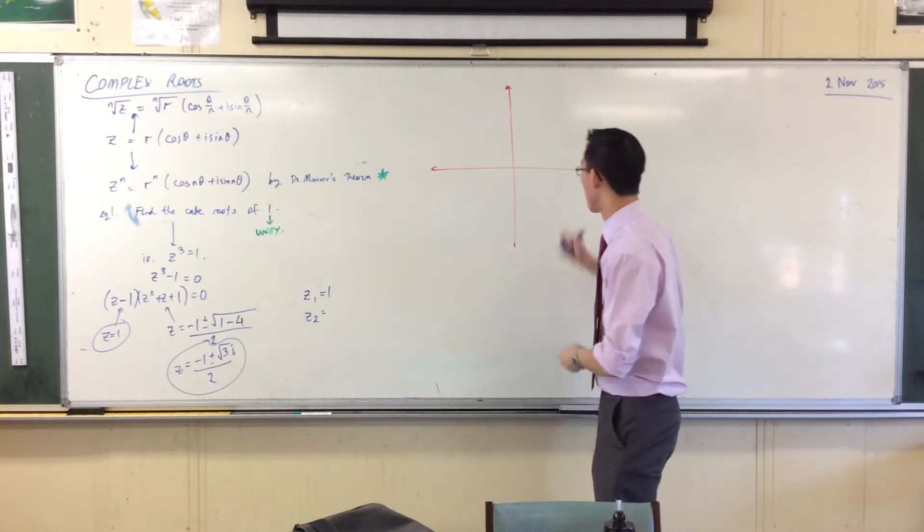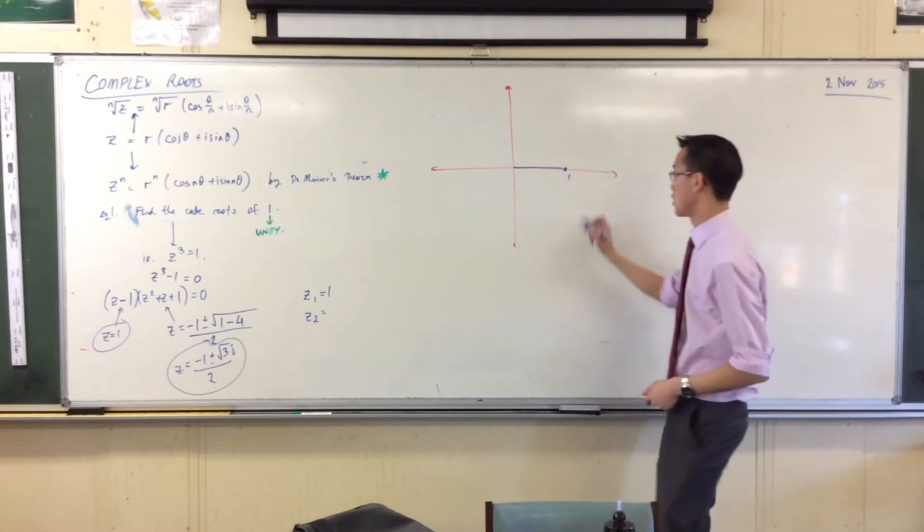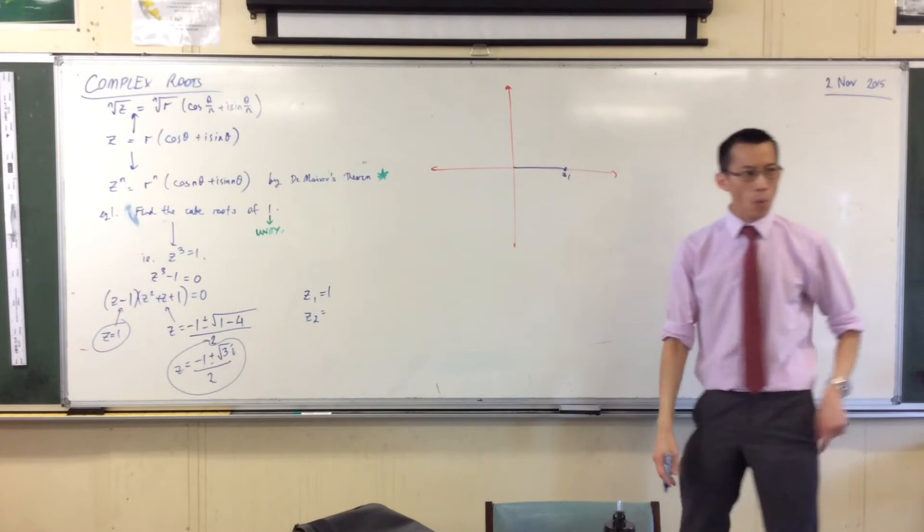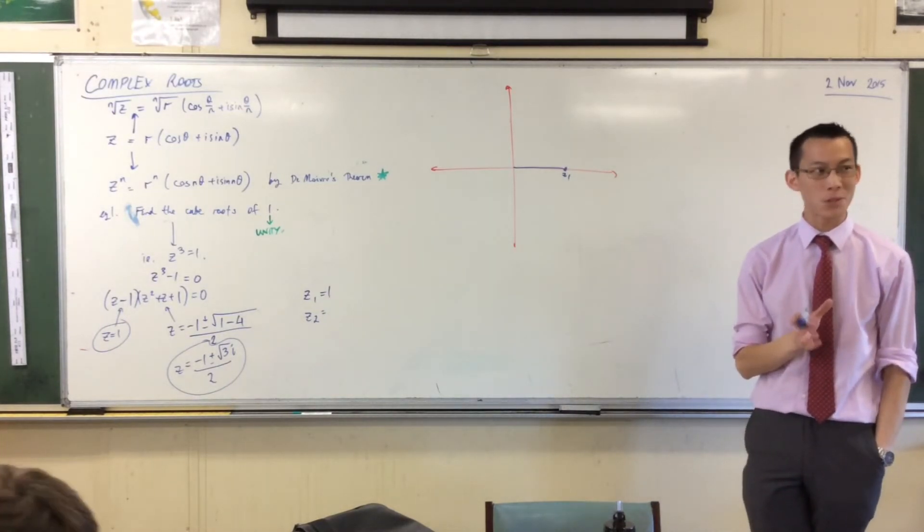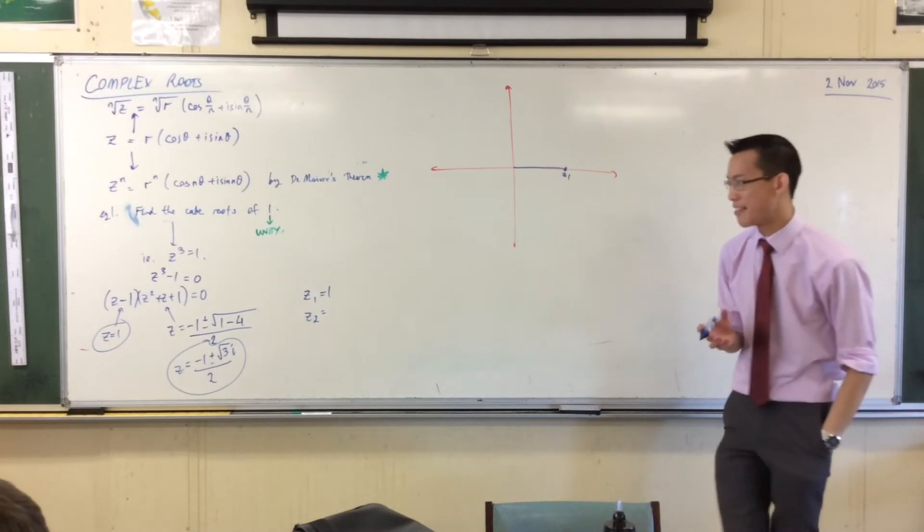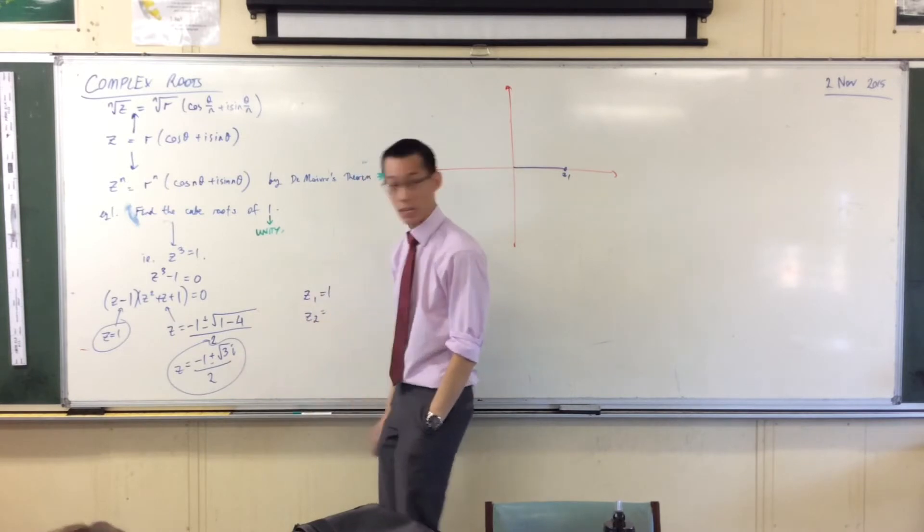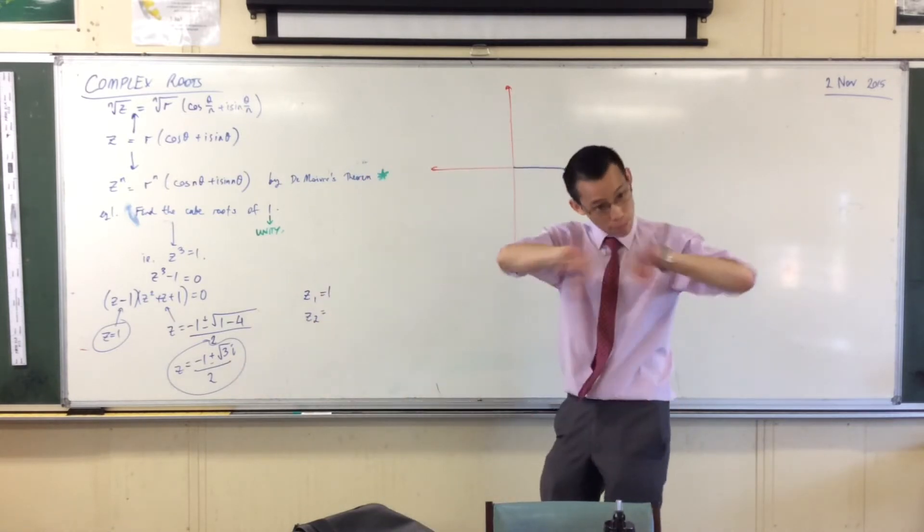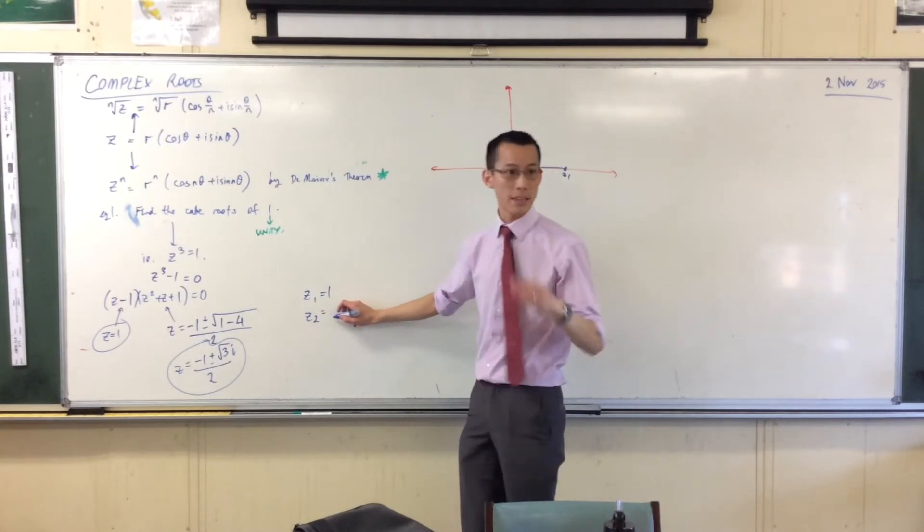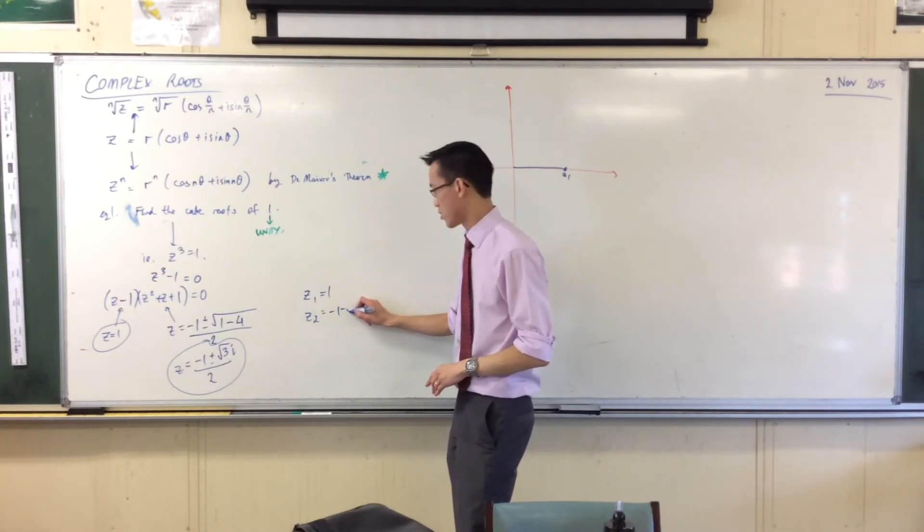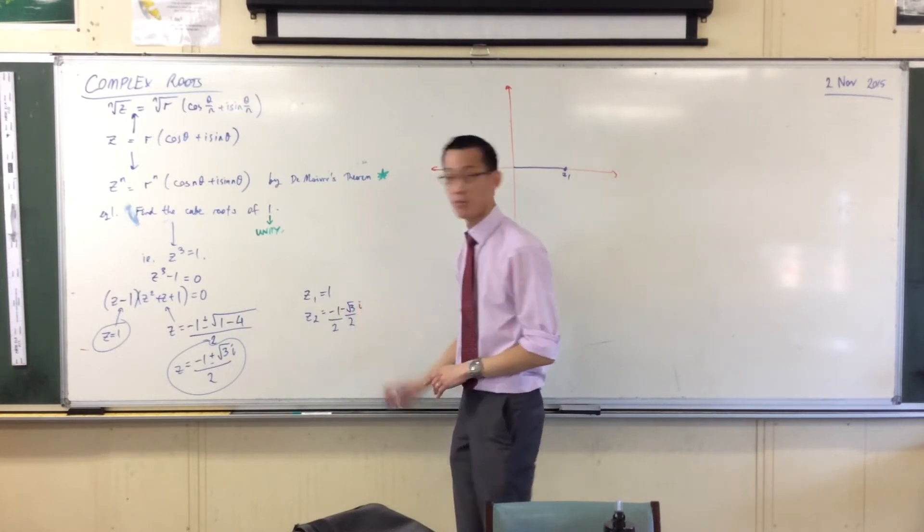Z1 is easy. I'm going to pop in here, just call that 1. So there's my Z1. When we have a look at Z2 and Z3, if we pop these in mod arg form, we'll be able to work out where these are. How do I convert this to mod arg form? I'm going to have to split out the real and imaginary parts. If I go, we'll take the negative case first. Minus 1 minus root 3i, that's both on 2.